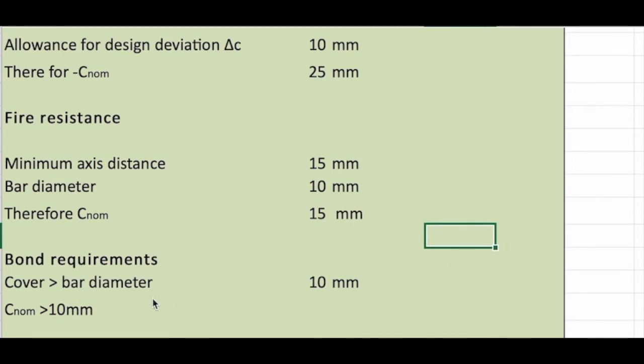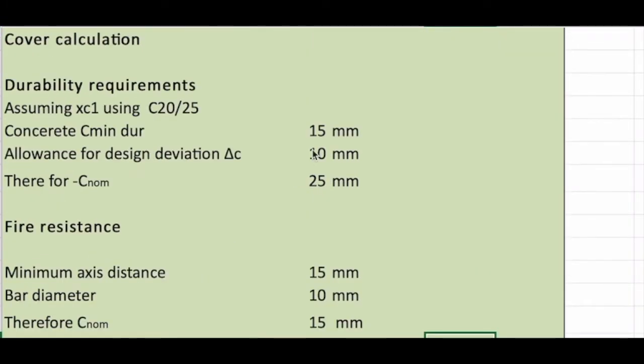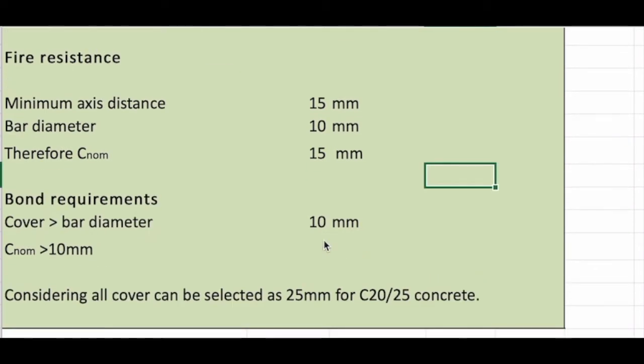For the bond requirements, cover has to be greater than bar diameter. So the bar diameter, we assume 10 mm. So C nominal has to be greater than 10 mm. By considering all these things, I'm going to choose 25 mm as the cover for the C20-25 concrete.